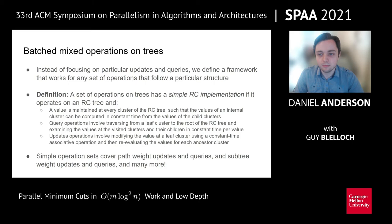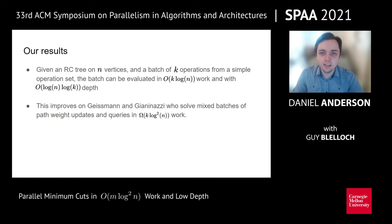Our result for batched mixed operations on trees is: given an RC tree on n vertices and a batch of k operations from a simple operation set, we can evaluate the batch in k log n work and just log n log k depth. This improves on an algorithm of Geisman and Gianni Natsi, who solve mixed batches of path-weight updates and queries in at least k log squared n work. So our algorithm is both more general — since theirs only works for this specific class of updates and queries — and is a factor of log n faster.